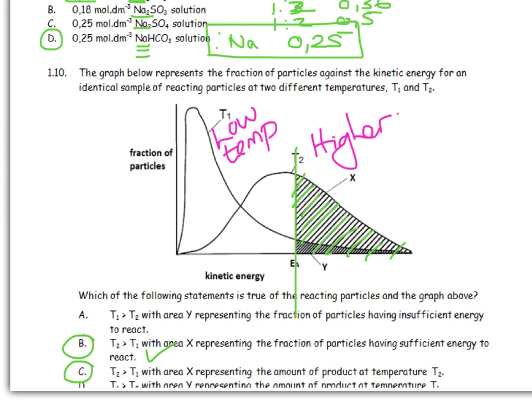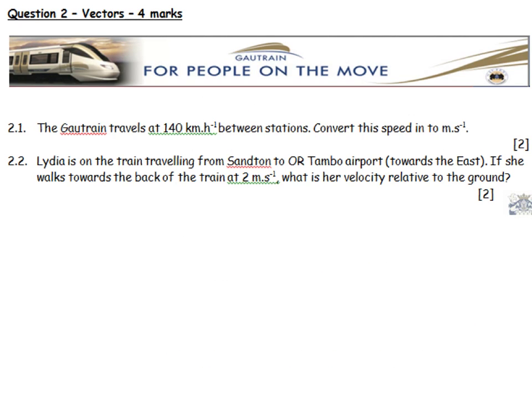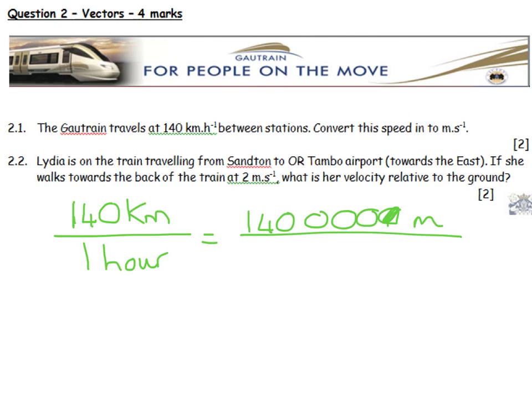How train travels at 140 kilometers per hour, converted to meters per second. My favorite question. 140 kilometers per one hour is equal to 140,000 meters per 3,600 seconds, and you get 38.89 meters per second.